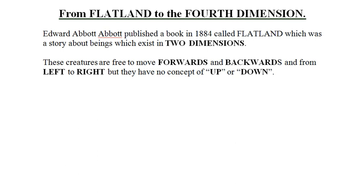Edward Abbott Abbott published a book in 1884 called Flatland, which was a story about beings which exist in two dimensions. These creatures are free to move forwards and backwards, and from left to right, but they have no concept of up or down.